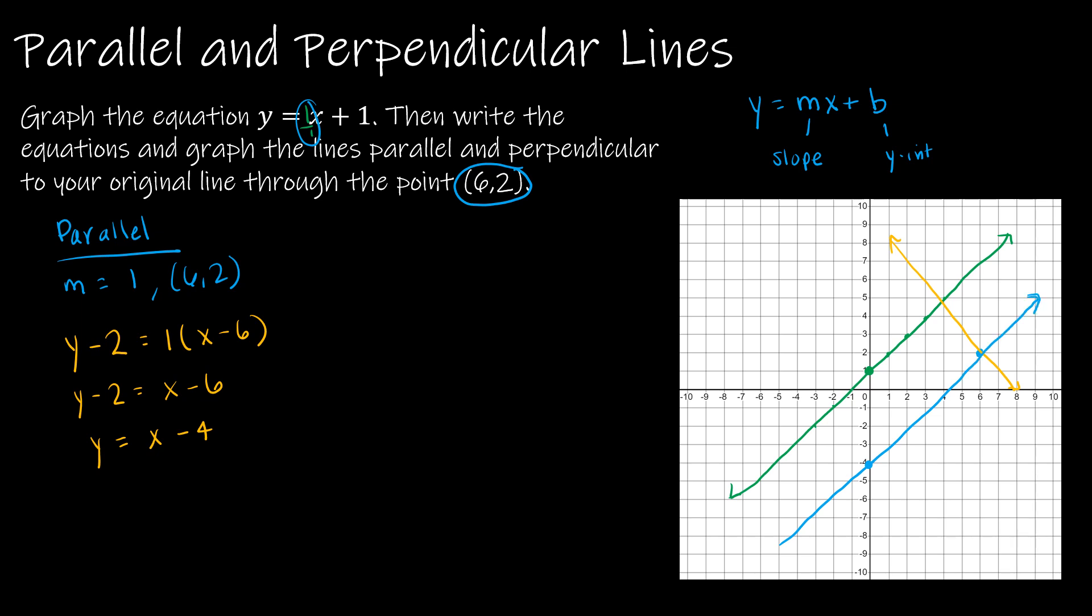Now, how am I going to graph the line perpendicular? What I know about perpendicular lines is that they have the opposite sign reciprocal slope. So if my original slope was m equals 1, my perpendicular slope is m equals, I'm going to take 1 as a fraction, I'm going to flip it over, which is still 1, and then I'm going to change the sign. So now my slope is negative 1.